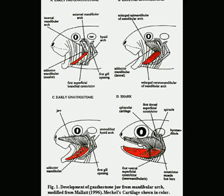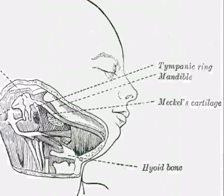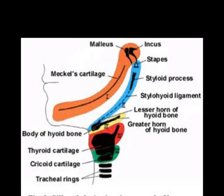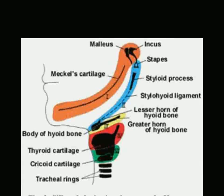In human beings, instead of supporting gills, Meckel's cartilage just becomes the sphenomandibular ligament. This is just one more example — like virtually every other of the thousands of components of the human body, you can see them and trace their homologues all throughout phylogenetic trees and throughout evolutionary history. The evolutionary history of Meckel's cartilage is also extremely interesting.